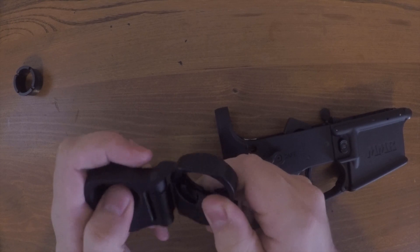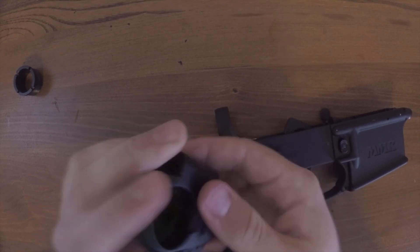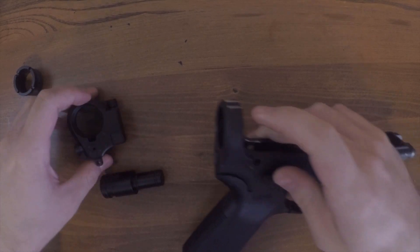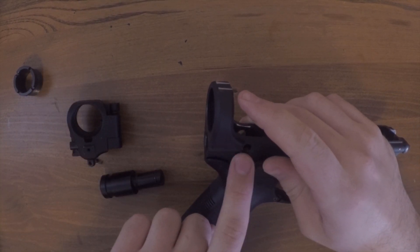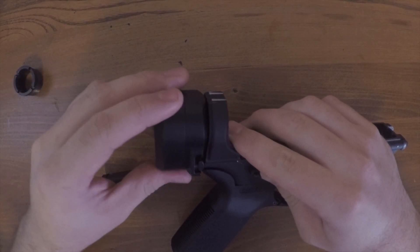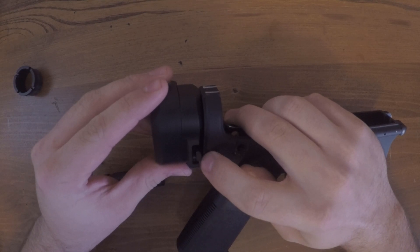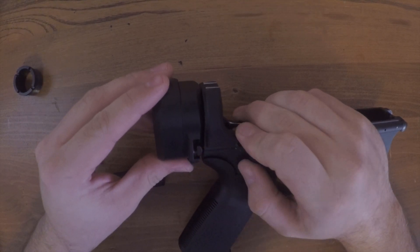As you know, your rear takedown pin has a detent and it has a spring. When this sits on the back, there's a little gap right there, and it doesn't cover where that spring comes out. It will never cover that.